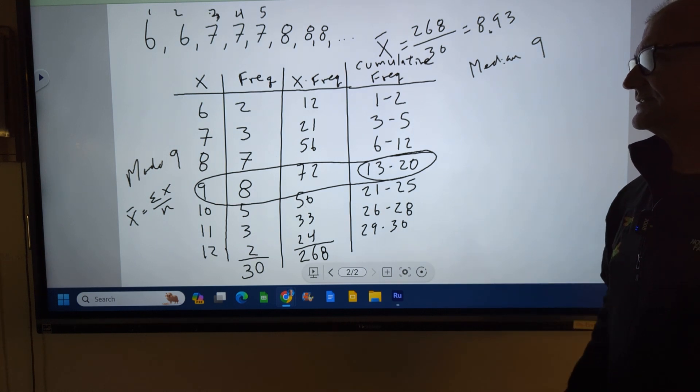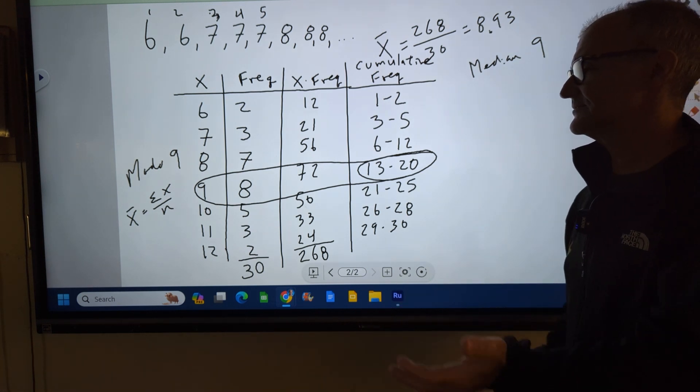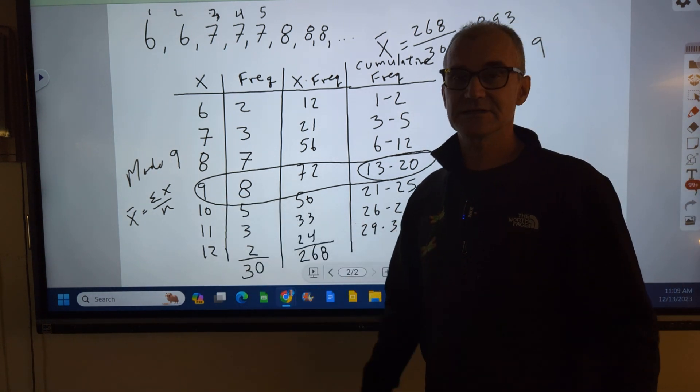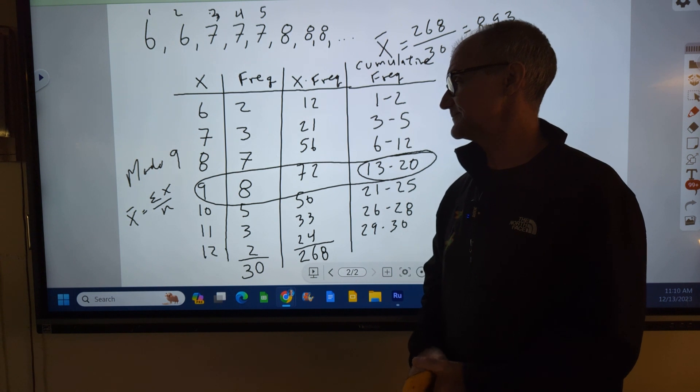So we have a mean of 8.9, a mode of 9, and a median of 9. They all kind of mean different things. You're always kind of, I mean, as you're thinking about shoe sizes, you'd expect the middle will be somewhere in there. The average to be that, and also the most common.